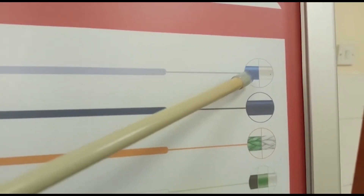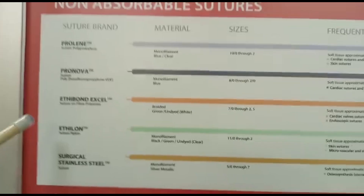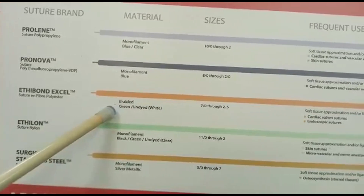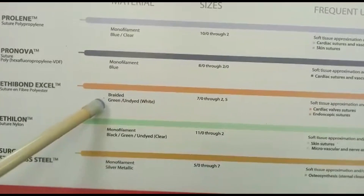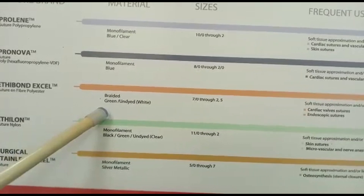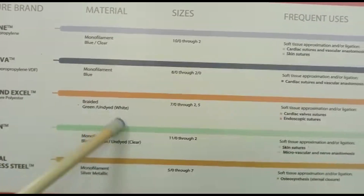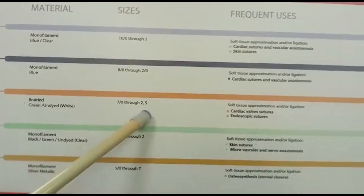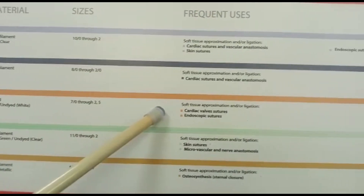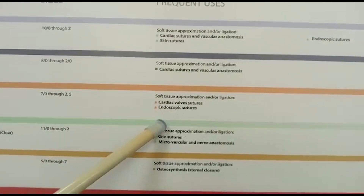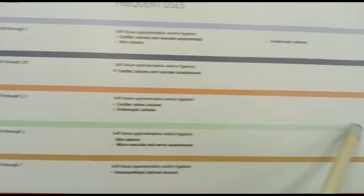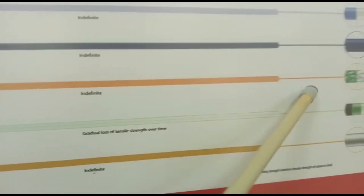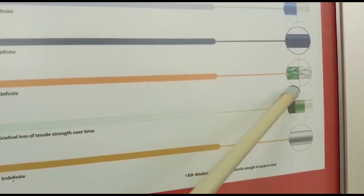Etibond is a braided, meaning woven, suture. They come in different colors — green and white — and different sizes from 7-0 through 2 to 5. They are also used in cardiac surgeries and endoscopic surgeries, and their strength is also indefinite, as illustrated with an example of a woven suture.